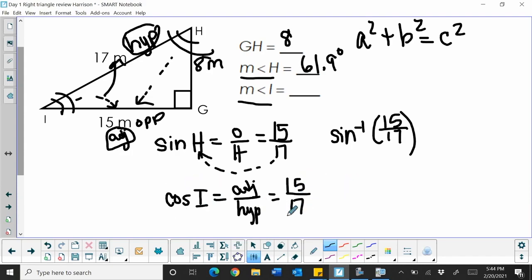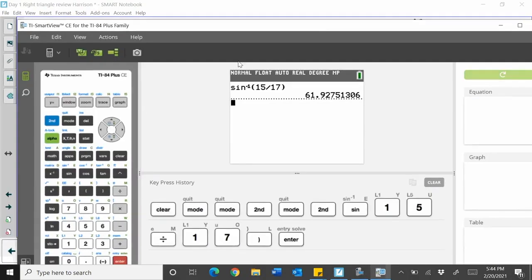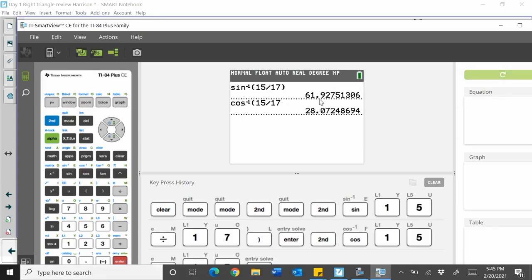And then to find the angle, because I'm working backwards, I'm going to find the cosine inverse of the ratio of 15 over 17. And let's see what that gives us. So grab your calculators, and we're going to take the second cosine to get the inverse cosine, 15 divided by 17. And that gives you 28.1 degrees.